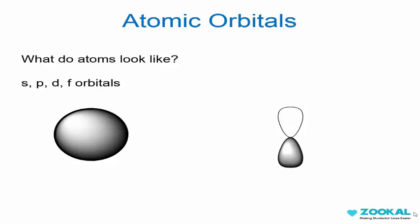First we need to ask ourselves the question, what do atoms look like? I'm sure some of you know that there are SPDF orbitals but when we talk about organic chemistry we mainly look at the S and P orbitals. This is the S and this is the P orbital.